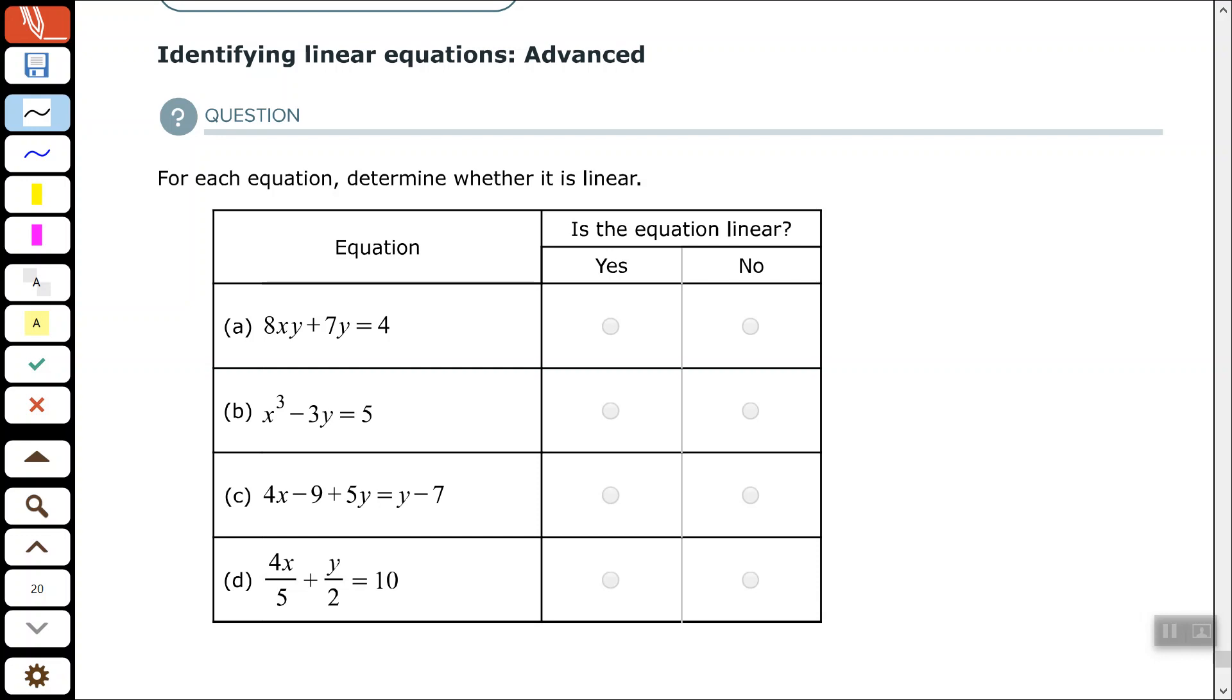So, the first one, part A, we have 8xy. Remember, we are looking for Ax plus By equals C. We have 8xy plus 7y equals 4.